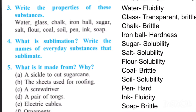Question number three: Write the properties of the substances. Water — fluidity. Glass — transparent, brittle. Chalk — brittle. Iron ball — hardness. Sugar — solubility. Salt — solubility. Flour — solubility. Coal — brittle. Soil — solubility. Pan — hard. Ink — fluidity. Soap — brittle.